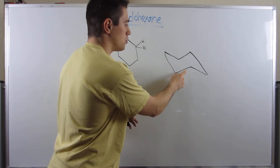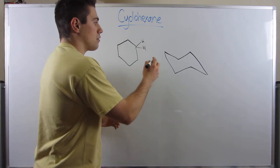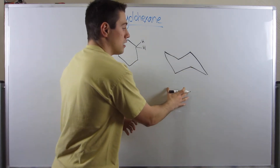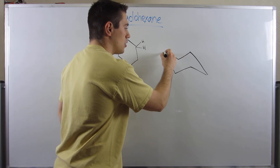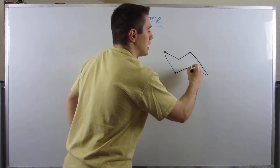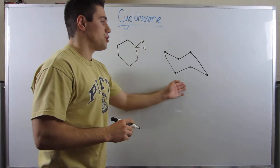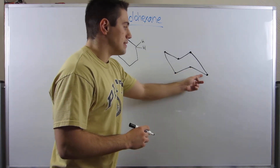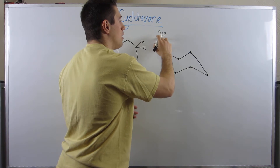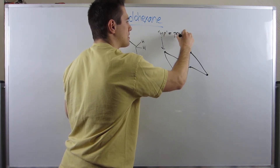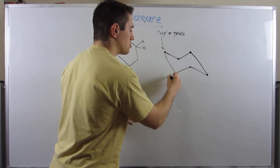First and foremost, there are six carbons — still six carbons. The carbons in the chair conformation alternate from going down, up, down, up. The carbons you have to go up to are called peaks; the carbons you have to go down to are called valleys. At a peak, you draw one bond straight up and one slightly down. At a valley, you draw one bond straight down and one slightly up.